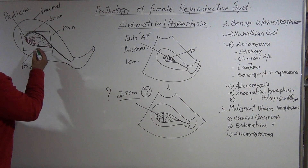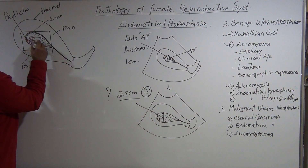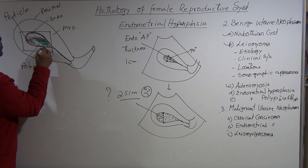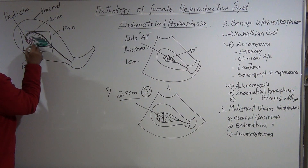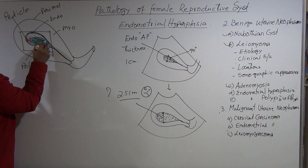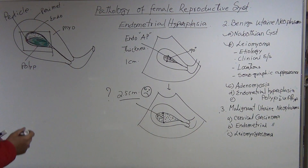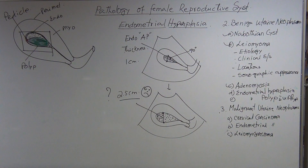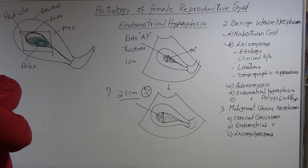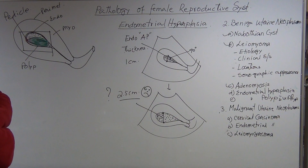This is a polyp with a smooth border, hypoechoic, homogeneous, with a pedicle. There are blood vessels passing through the pedicle. This is a polyp, but I want to confirm it.